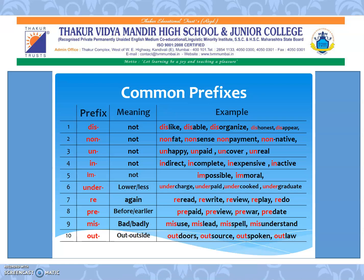Let us look at common prefixes and their meanings. Using DIS gives words like dislike, disable, disorganize, dishonest, disappear — all negative words. NON gives non-fat, nonsense, non-payment, non-native — again negative words. UN gives unhappy, unpaid, uncover, unreal — opposites. IN, suggesting not, gives indirect, incomplete, inexpensive, inactive.